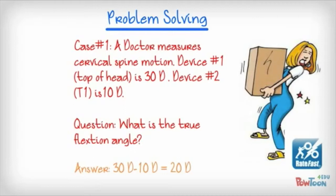So the question is, what is the true flexion angle? And the answer is 30 degrees minus 10 degrees equals 20 degrees, and that is the true flexion angle for this individual.